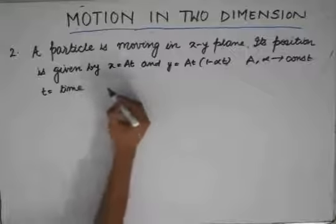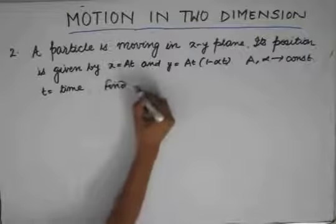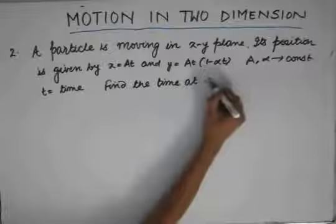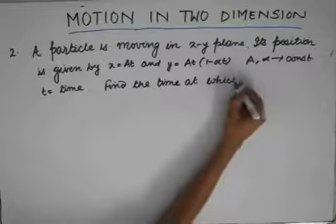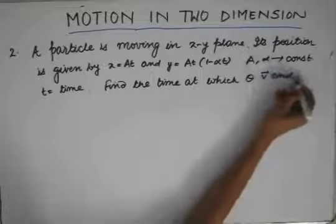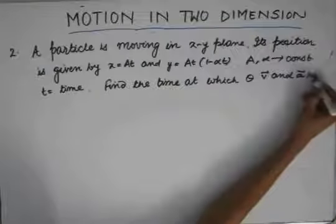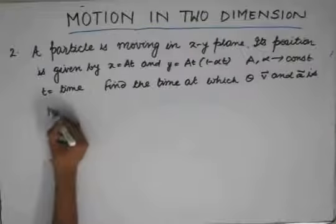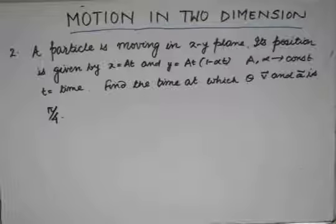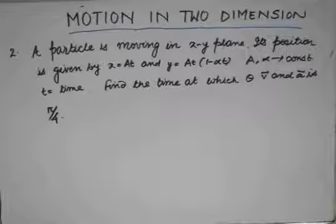We need to find the time at which the angle theta between the velocity vector and the acceleration vector is pi by 4. So the question is: a particle is moving in the xy plane, its position is given by x equals at and y equals at(1 minus alpha t), where alpha and a are constants. We are asked to find the time at which the angle between the velocity and acceleration vector is pi by 4.